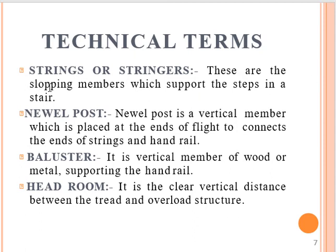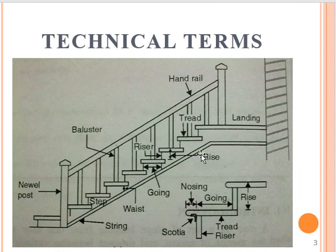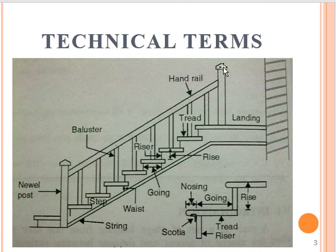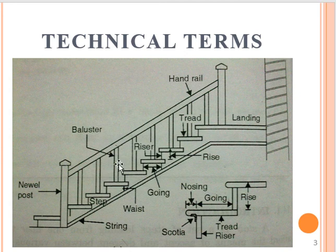Strings are the sloping members which support the steps in the stair. You can say it is a string — it is a horizontal and inclined sloping surface. A baluster is a vertical structure to support the handrail, providing support between the handrail and the string. These are all technical terms.